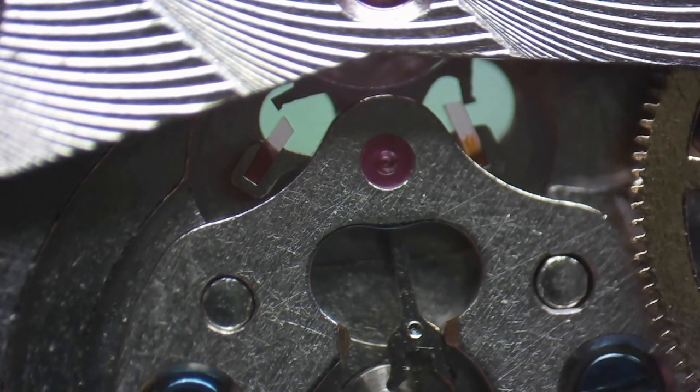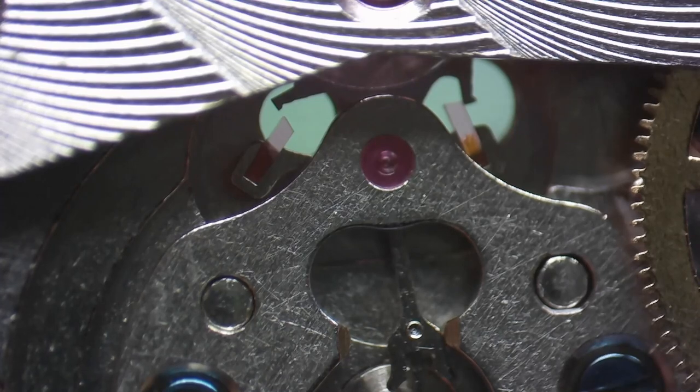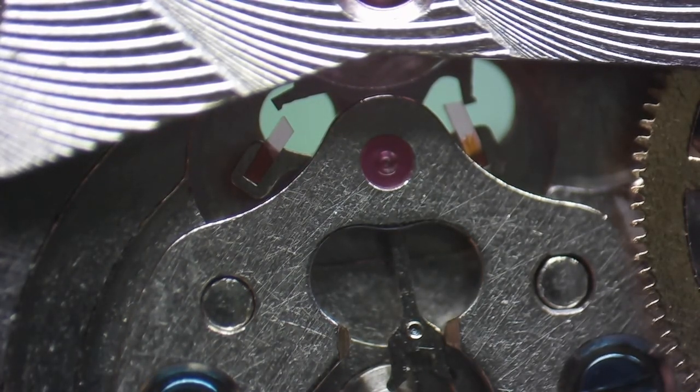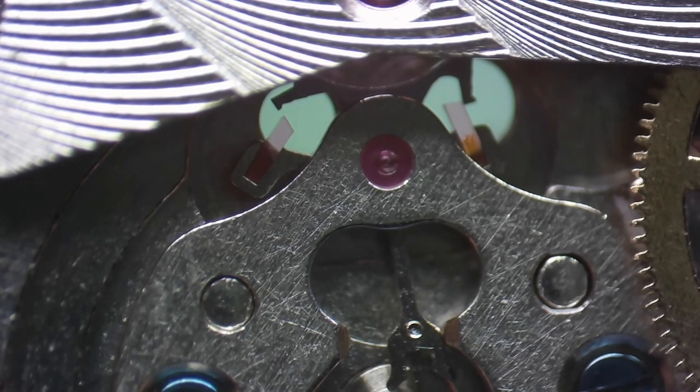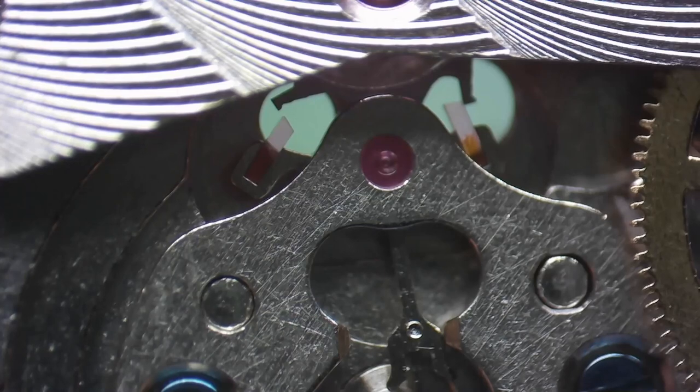Now at this point, the grease is on all the teeth, but it's going to be heavier on some teeth and lighter on the other ones. Now to correct this, we're simply going to advance the escape wheel until it makes four complete revolutions. I'll start it and we'll check back in a minute.